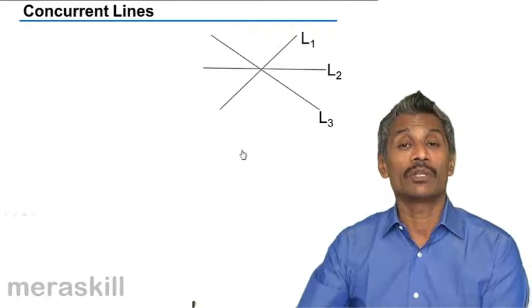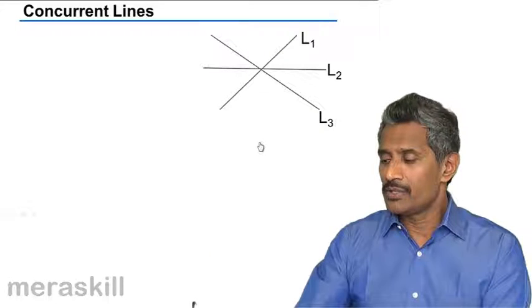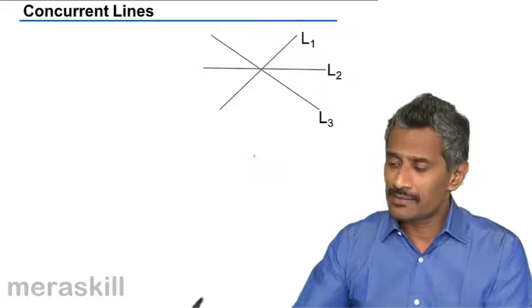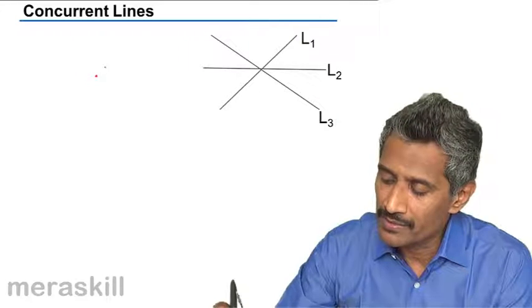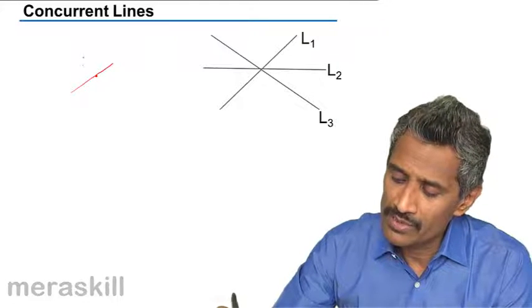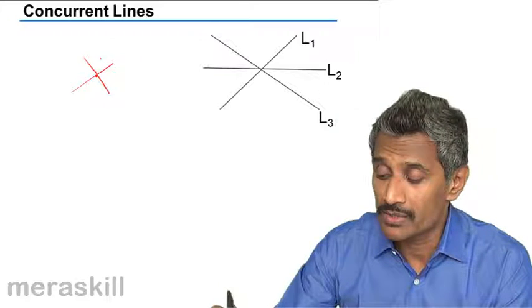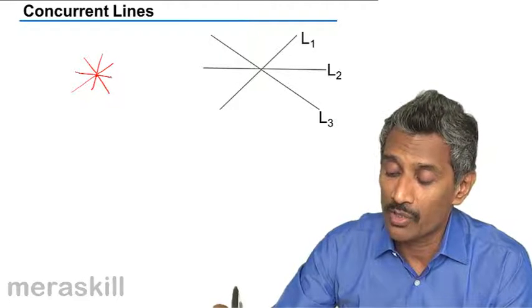The concept of concurrent lines: when you talk about concurrent lines, suppose you have a point here and two lines could easily pass through it, but suppose more than two lines pass through them, then we call them concurrent lines.